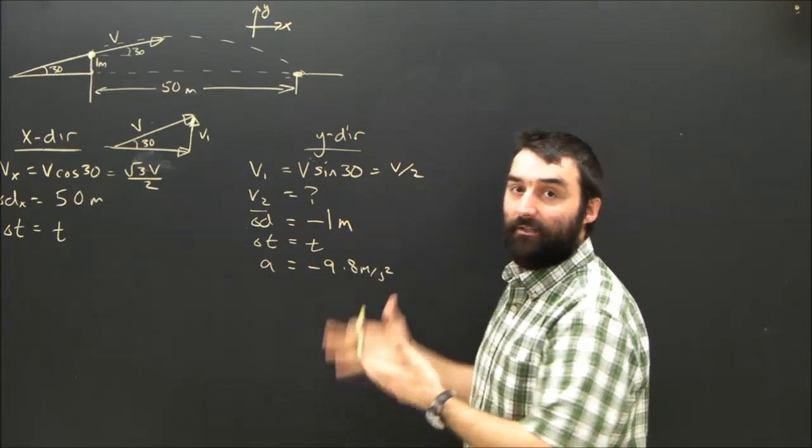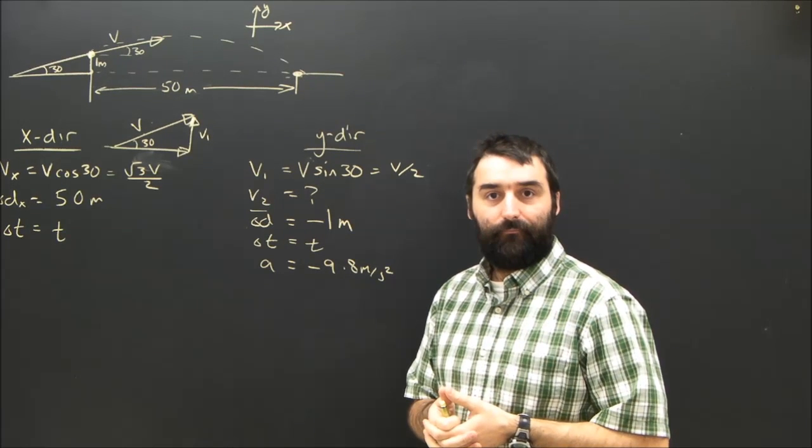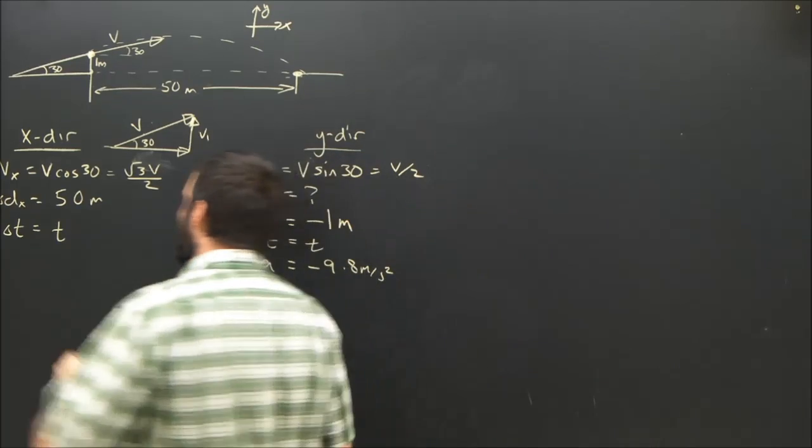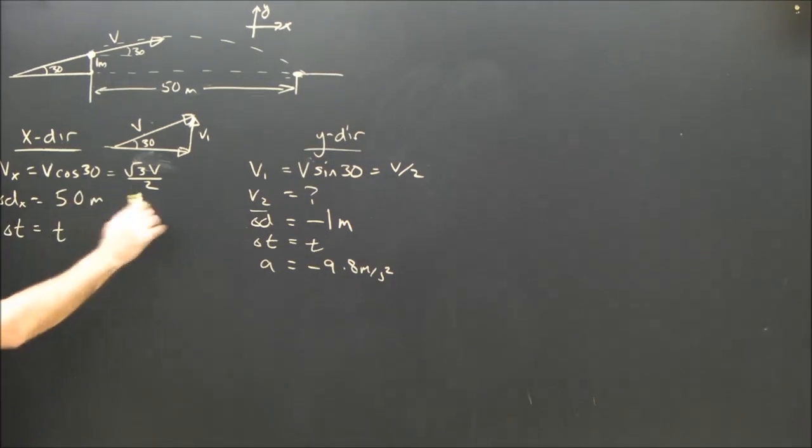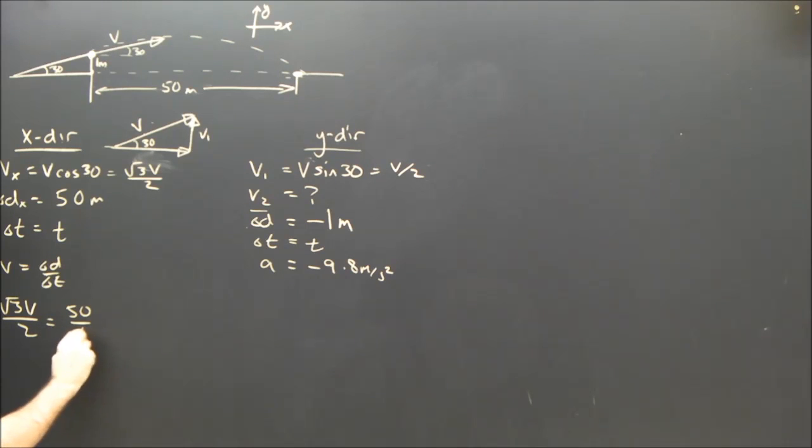X direction, Y direction, plug it in, solve, and try it again to get the answer. I'll of course finish it right now. Anyway, so the x direction, the only equation that governs the x direction, v dt is uniform motion, so velocity equals displacement over time. We can see therefore that root 3 v over 2 must equal 50 over t.